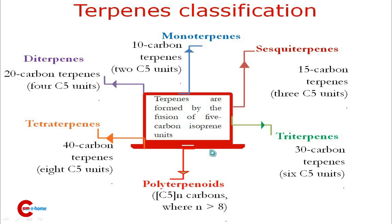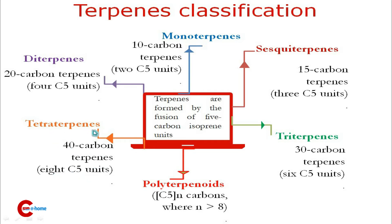10-carbon terpenes contain two C5 units and are known as monoterpenes. 15-carbon terpenes contain three C5 units and are known as sesquiterpenes. 20-carbon terpenes contain four C5 units and are called diterpenes. 30-carbon triterpenes contain six C5 units, 40-carbon tetraterpenes contain eight C5 units, and polyterpenoids contain more than eight C5 units.